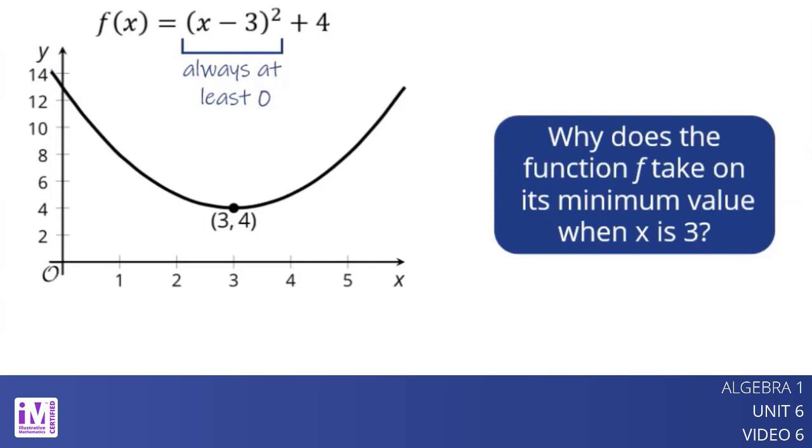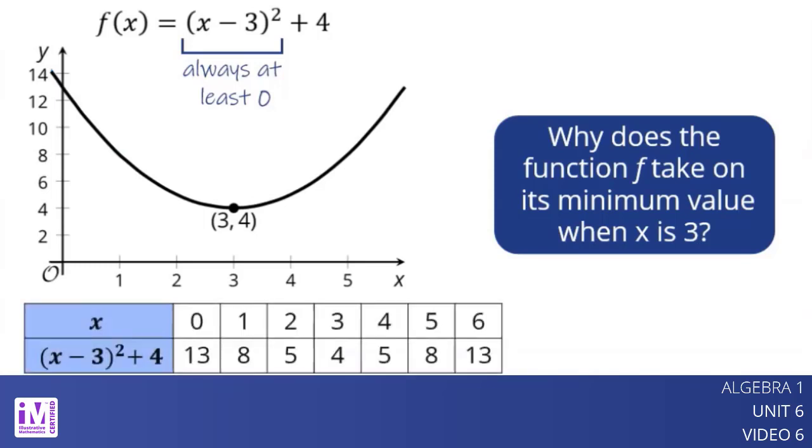So the function f has a minimum value at x equals 3. This table shows some values of the function for some values of x. Notice that the output is the least when x equals 3 and it increases both as x increases and as it decreases.